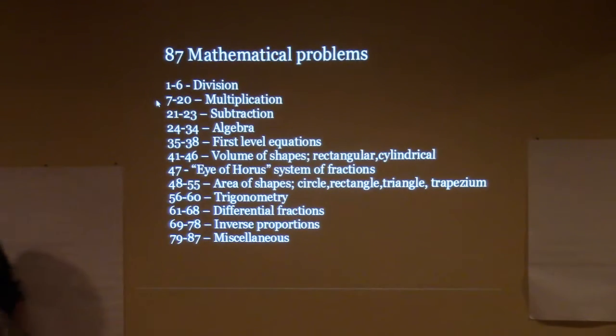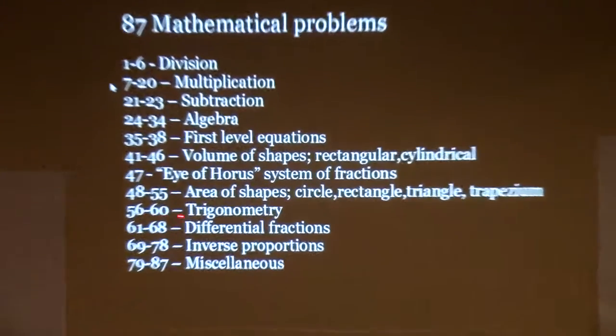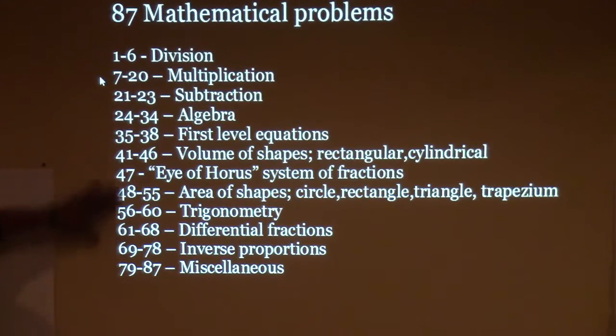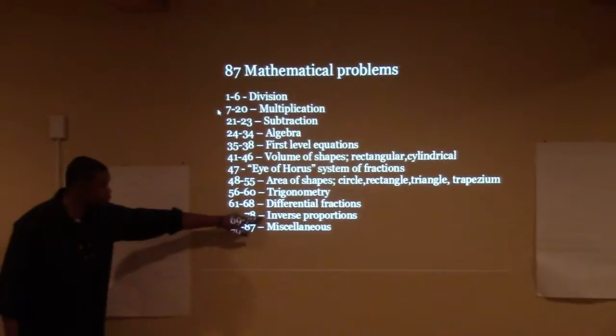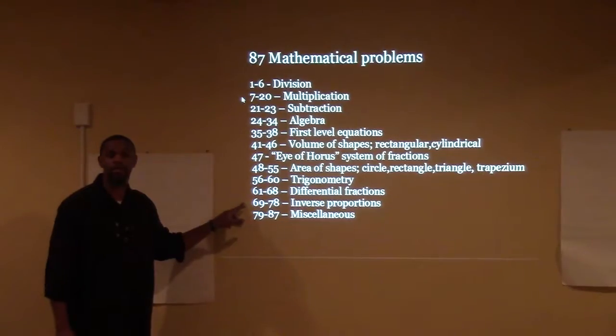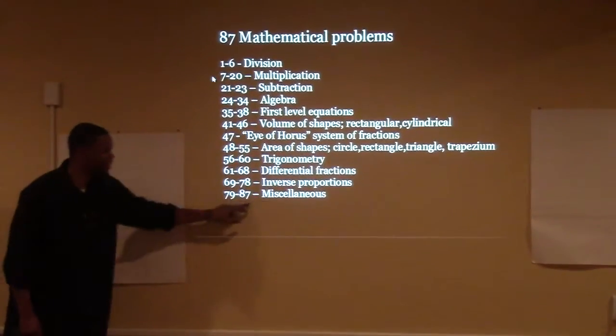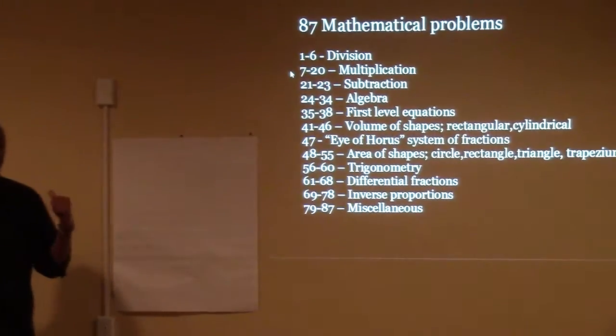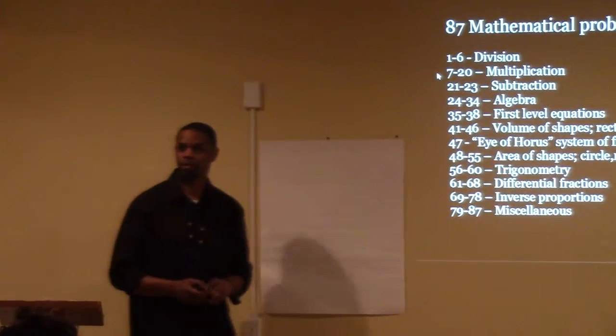35 through 38, you can see that first level equations. You had calculating volume of shapes. You had the Eye of Horus, which we'll look at in a minute. That's how they dealt with the system of fractions. They calculated the area of shapes: circle, rectangle, triangle. They had trigonometry, studying triangles right here. When I took this in high school, they were completely confused. I didn't even know it was about triangles. I'm sorry. I had 85 in the class. How did that happen? That's Western culture point. You can get a grade and you know nothing. We'll come back to that. Differential fractions. Now, all this now, this is 4,000 or 5,000 years ago now. Inverse proportions. Who knows what that is? Be honest. Miscellaneous problems from 79 through 87. But this is just a glimpse. This is a glimpse at what your ancestors understood and taught very well back in Kemet in relation to mathematics.